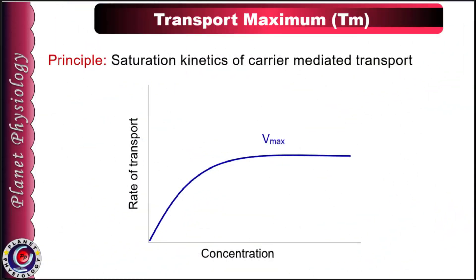Transport Maximum is based on the principle of saturation kinetics of carrier-mediated transport. It means that as the number of solute particles to be transported increases, the rate of transport also increases initially, but soon it attains its maximum value as indicated by the plateau in this figure. This is called Vmax.